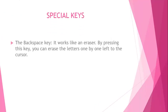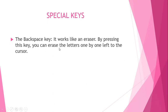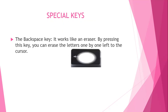Now we will see the third type of special key — the backspace key. Why is the backspace key used? It works like an eraser. By pressing this key you can erase the letters one by one to the left of the cursor. If you have the cursor in a particular position, you can erase the letters to the left of that cursor. This is the picture of a backspace key.